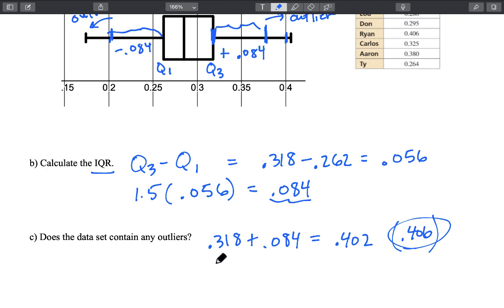Let's see if we have an outlier on the lower end. We're going to take Q1 which we said was 0.262 and we're going to subtract from that 0.084 and that is going to give us 0.178.